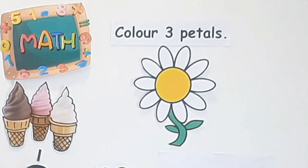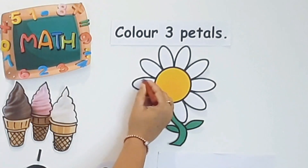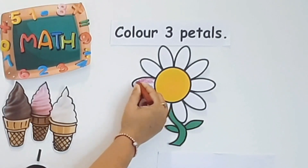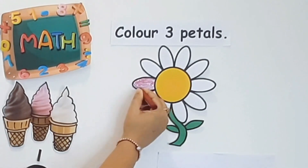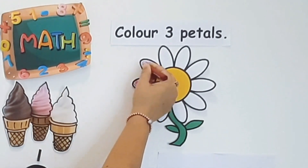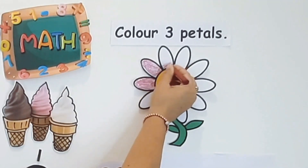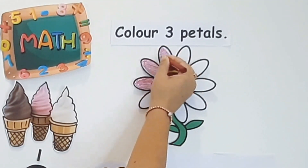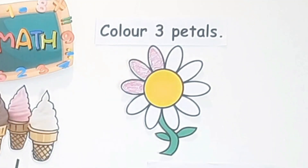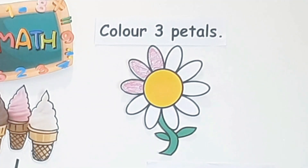Now it's time to color the petals. There's a flower with many petals and we just have to color 3 petals. I'm using my red color to color the petals. It's done! Now let's count how many petals I've colored: 1, 2, 3. It's correct!